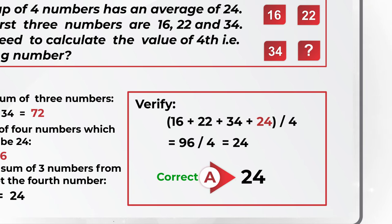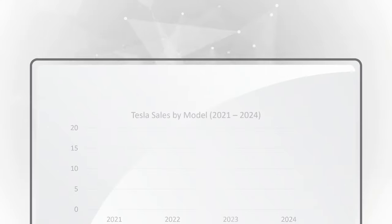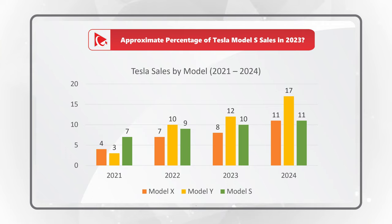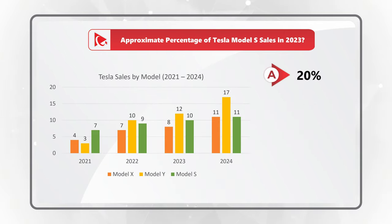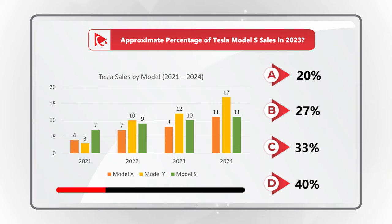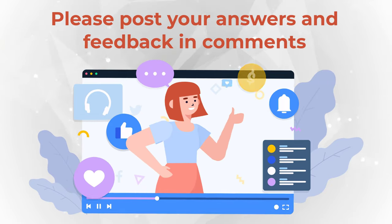Hopefully you've nailed this question and now know how to answer similar problems on the test. Now I think it's an excellent time for you to try your skills. You need to determine the approximate percentage of Tesla Model S sales in 2023. You're presented with a chart that shows sales by model between the period of 2021 and 2024. Choices are: Choice A: 20%, Choice B: 27%, Choice C: 33%, Choice D: 40%. Give yourself a little bit of time, do the mental math, maybe pause this video, and post your answer in comments.